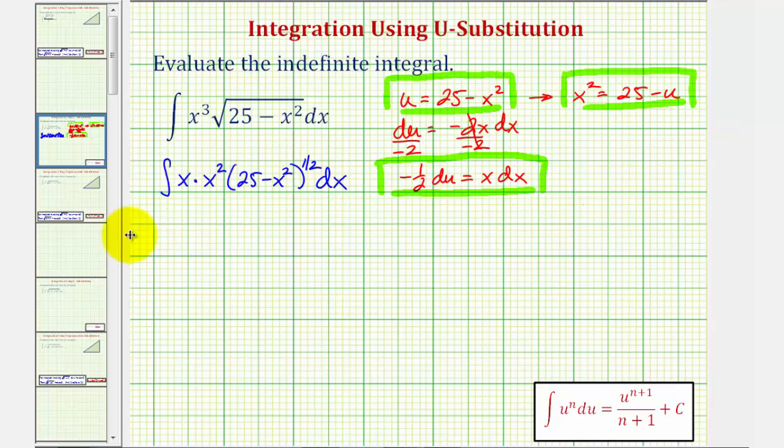And now I'll perform our substitutions. So x dx is equal to negative one-half du. We'll factor out the negative one-half. Here's differential u. x squared is equal to 25 minus u. And the quantity 25 minus x squared is equal to u. So we have times u to the one-half.